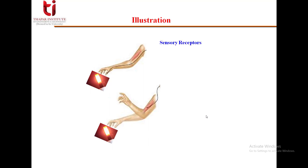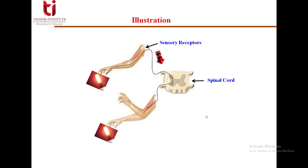It includes signals from the sensory receptors going to the central nervous system — here we are taking the spinal cord. The central nervous system interprets that signal and finally responds to the motor neurons, telling us to pull our hand back. This process simply represents an example of the nervous system.